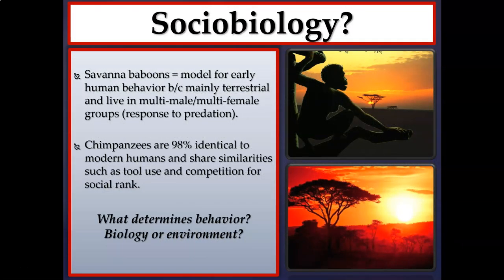Other species used as models for early human behavior include various savannah baboons, like hamadryas or gelada baboons, mainly because they live in similar habitats and organize their groups similarly to early humans. Chimpanzees and bonobos are 98% identical to modern humans and share other similarities such as tool use and competition for social rank. Sociobiology essentially asks: what determines behavior — biology, social environment, physical environment, or a combination of all these things?